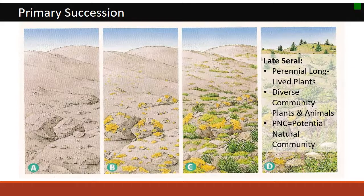In the late seral stage, we have plants that are long-lived and perennial — like trees and shrubs — starting to be part of the community. The community is diverse; it's not just plants but communities of plants and animals living together. Animals are foraging on the plants, putting organic matter into the soil, and changing the soil. They eventually come to a fairly stable community, which would be called the potential natural community — the end point of succession.